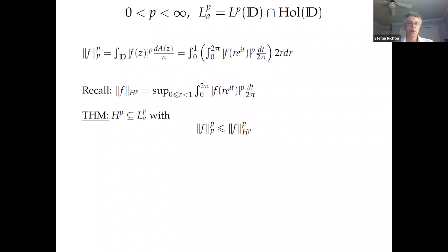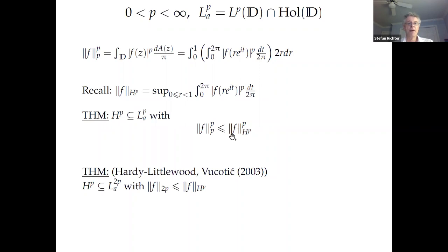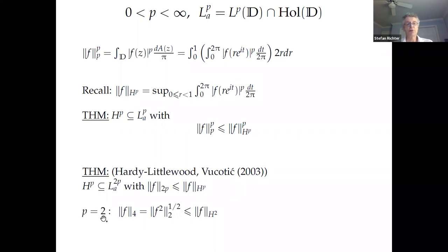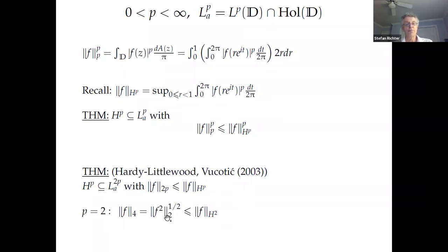This inequality is not optimal. These spaces get smaller as p increases, and using classical Hardy-Littlewood estimates, Hp is actually contained in L^{2p}_A. The contractive norm inequality with exact equality was observed by Vukotic in 2003. For p equals two, the L2_A norm equals the square root of the H2 norm of f squared, and writing out as a power series and using Cauchy-Schwarz, you get it's less than the H2 norm of the function.